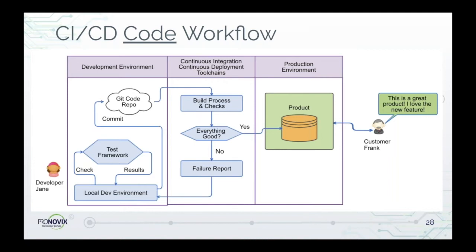Then CI/CD tools kick in and conduct automated builds and run automated tests. If the build results and test results are good, you either have a release candidate or you're waiting for other features or fixes to come in another build. Additional workflows then automate the deployment to production, making the latest features and fixes live — pointing out that your organization is fast and responsive and delivering value to the customer faster.